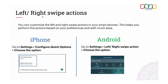You also have left or right swipe actions. When you receive or send an email, by swiping on that email you can left or right swipe it. Left swipe allows you to Archive, Move, or Delete the email. Right swipe allows you to Mark the email as Read or Unread. You need to enable the left or right swipe action in settings.